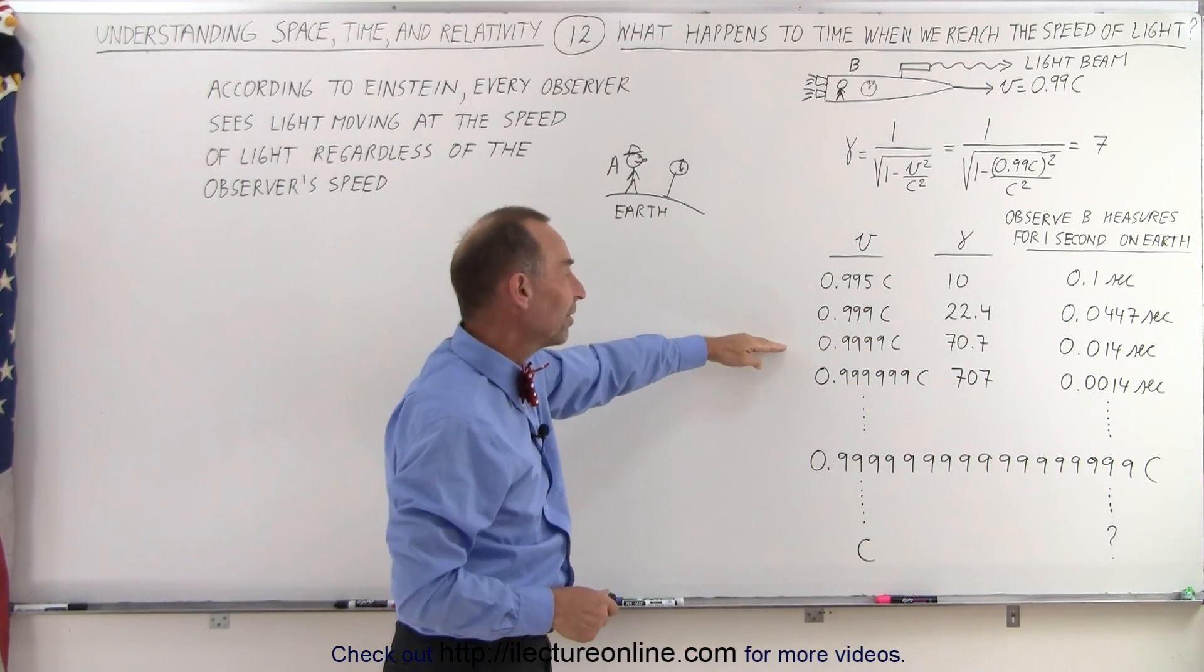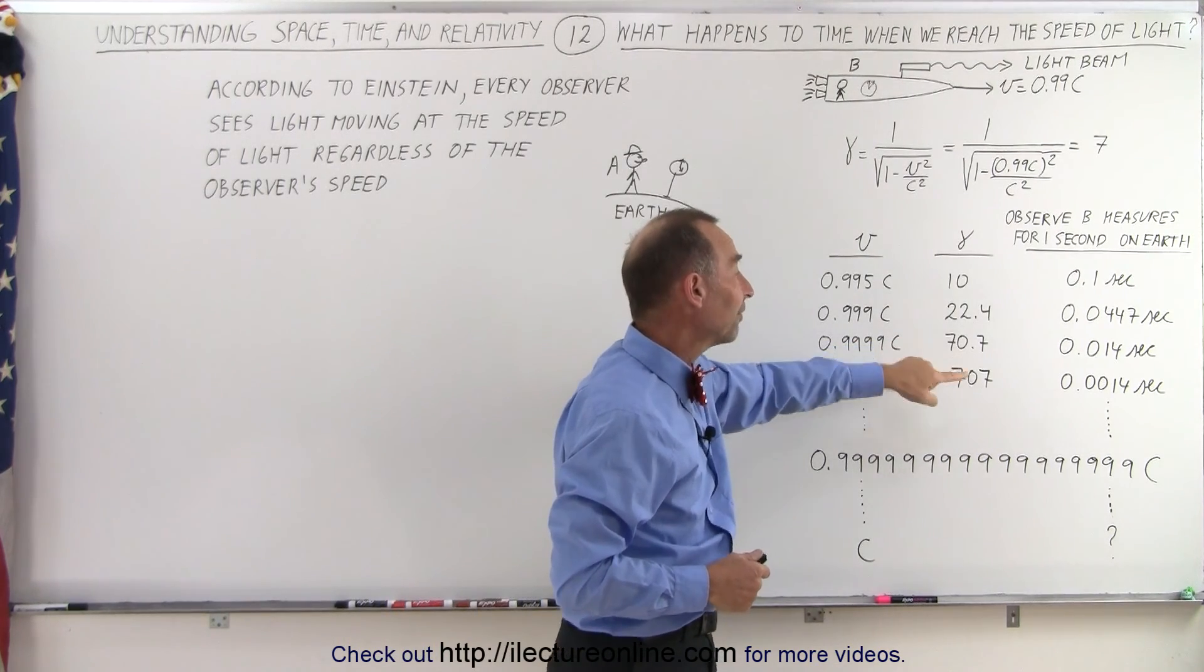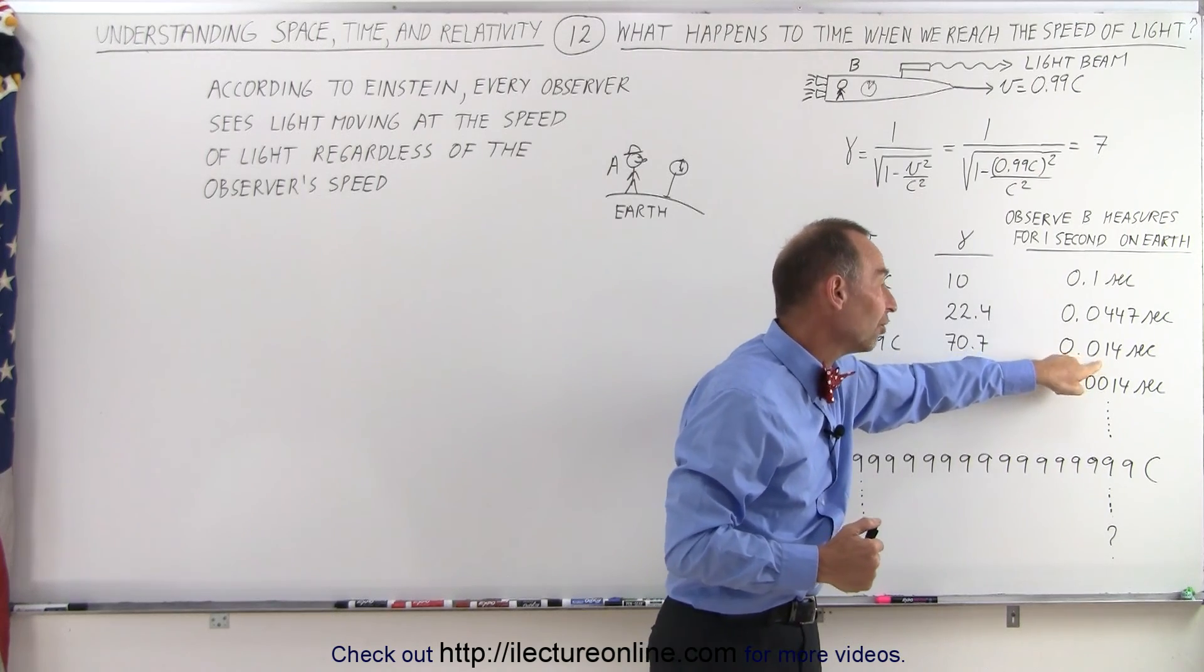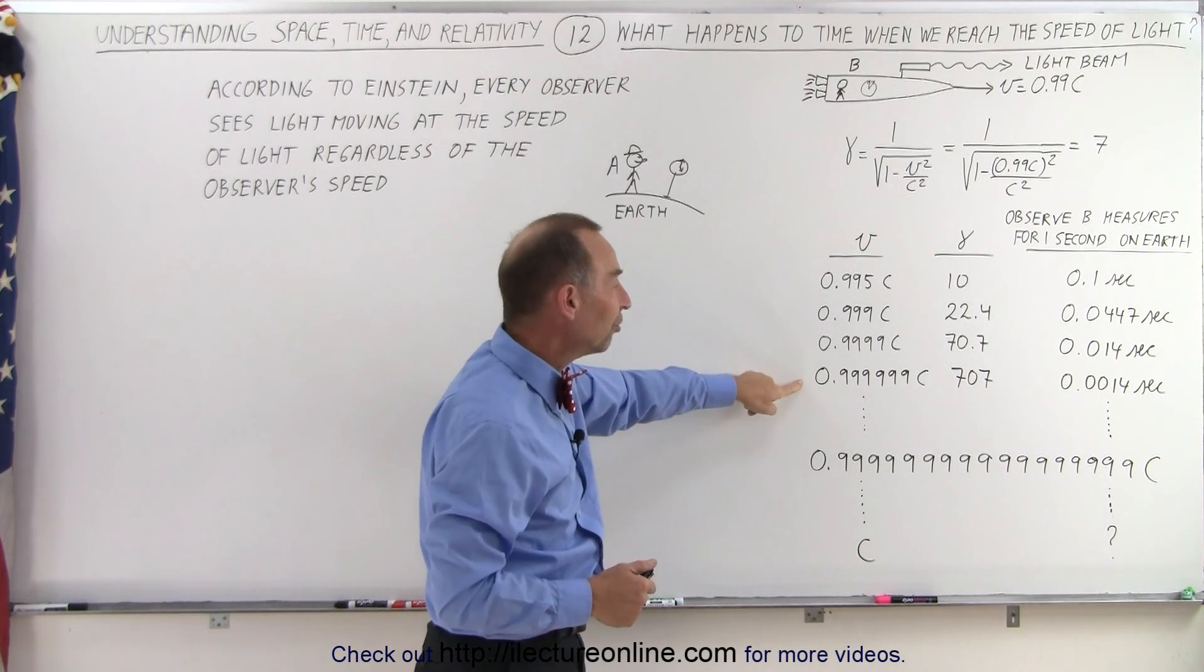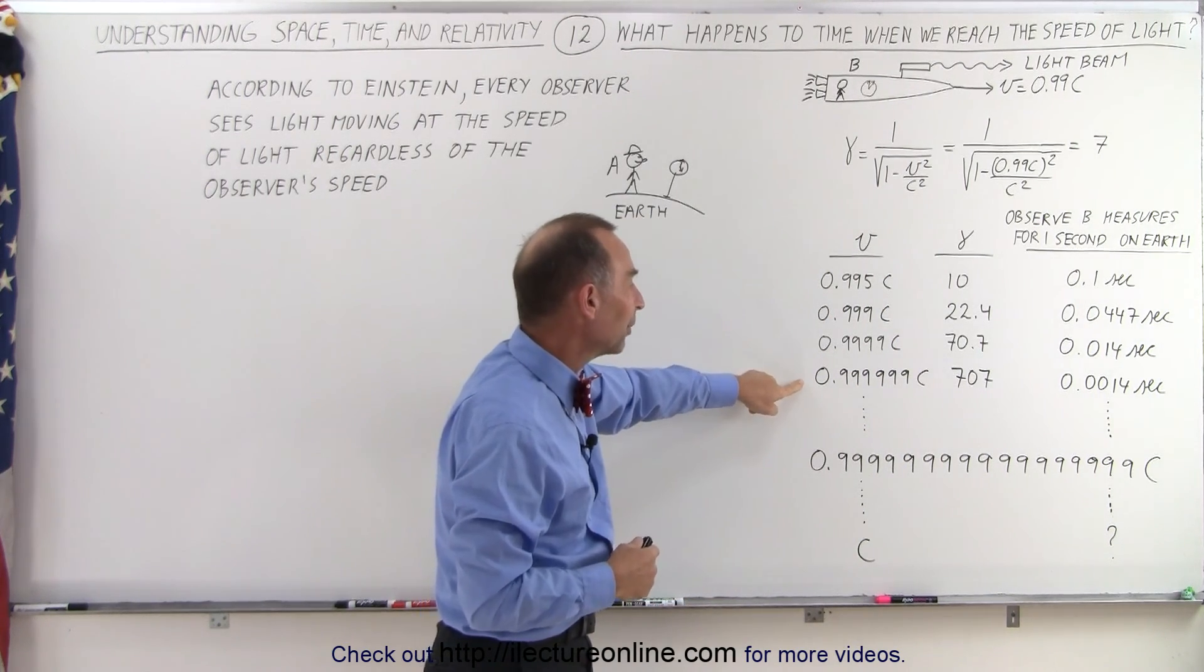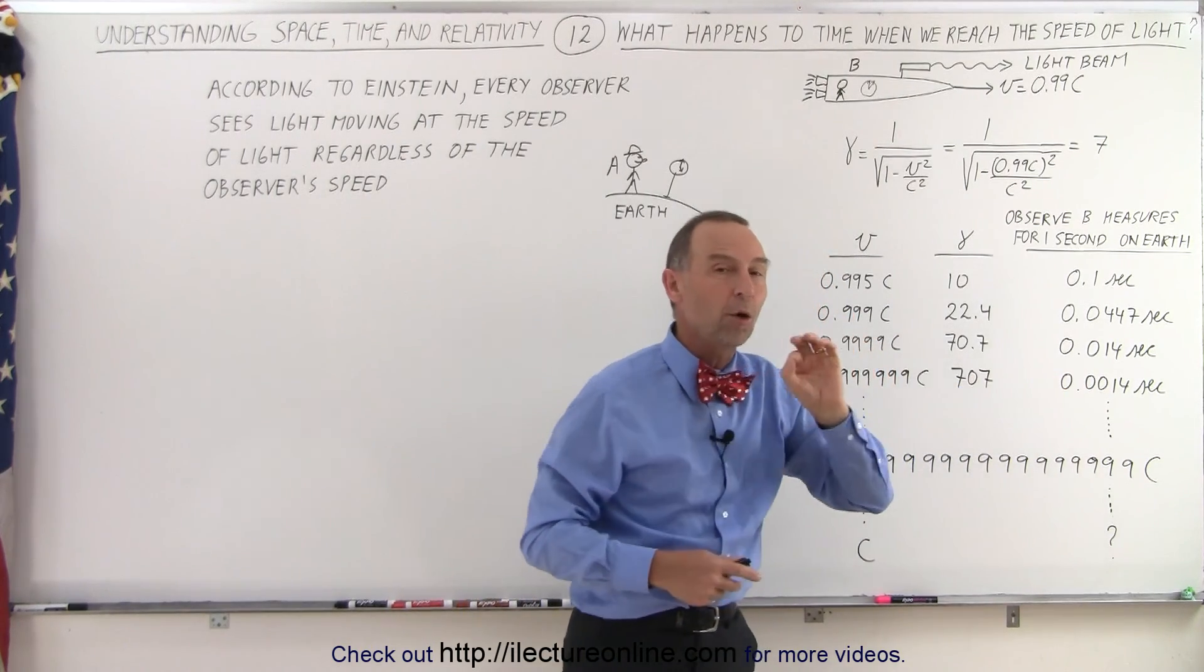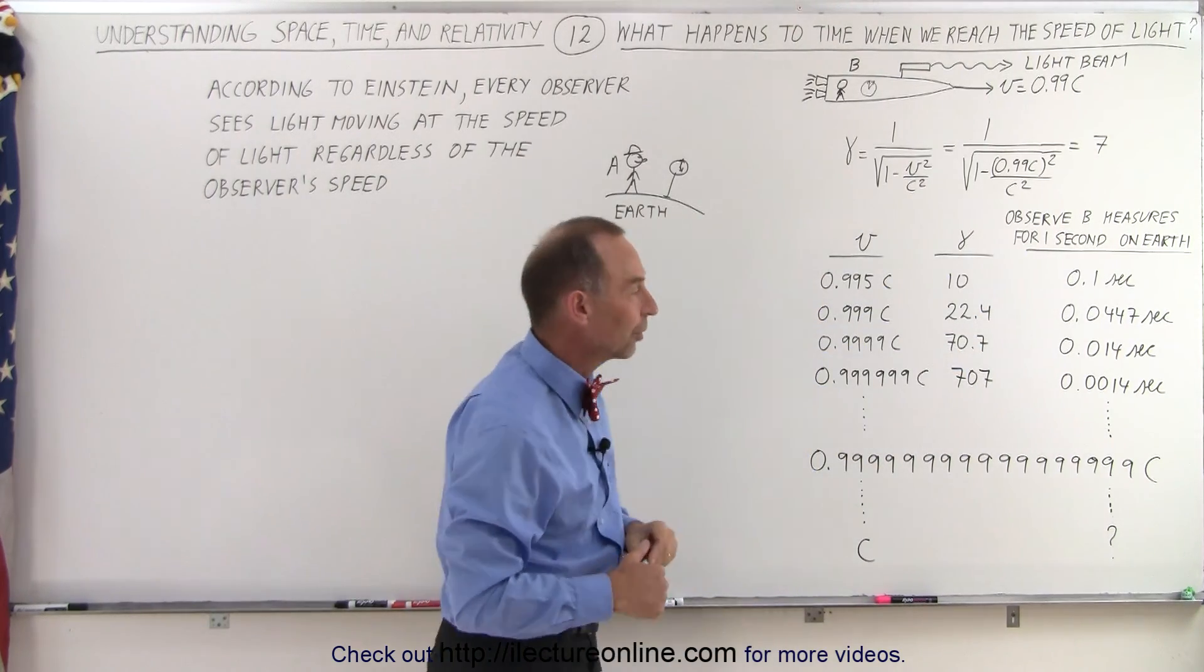But even faster than that, 99.99% the speed of light, the Lorentz factor is now 70.7, and the time experienced for every 1 second on the Earth is only 0.014 seconds. Then if we speed up to this speed, six nines past the decimal place, the Lorentz factor is now 707, and the time is now just barely over 1 millisecond for every 1 second experienced on the Earth.